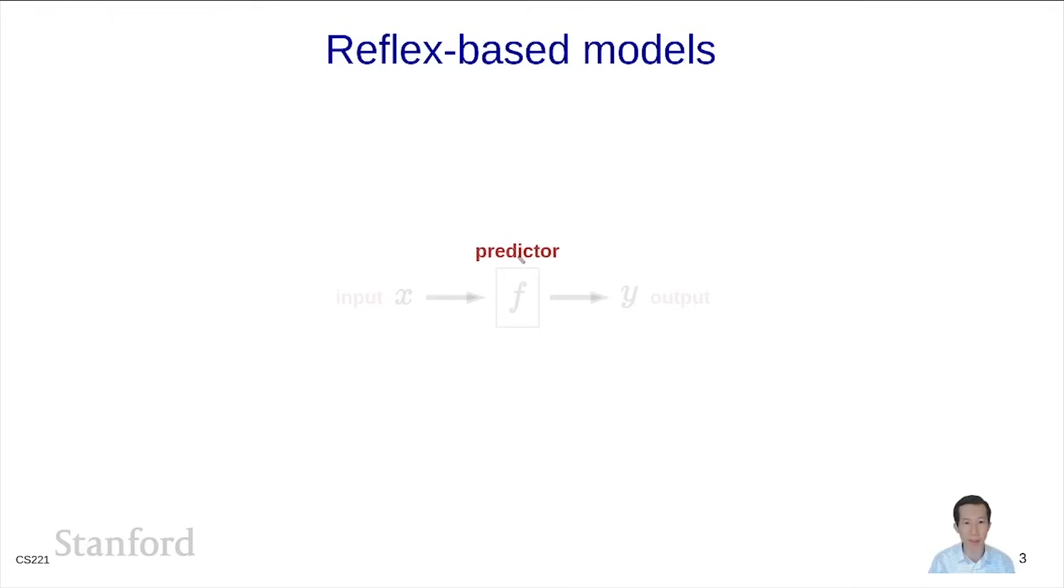We'll call a reflex-based model a predictor, and the predictor takes as input some x and produces some output y. In general, x can be something arbitrary like an image or text, and y is going to be restricted. That particular restriction determines what type of prediction task we are talking about.